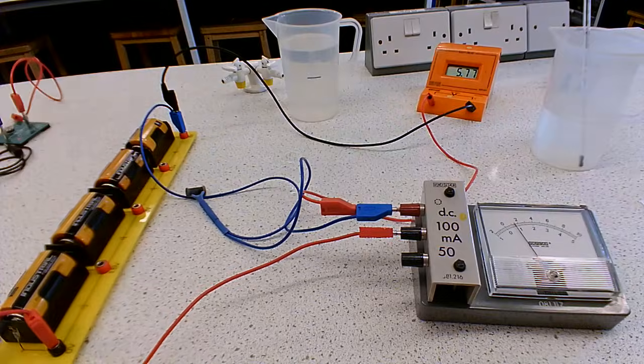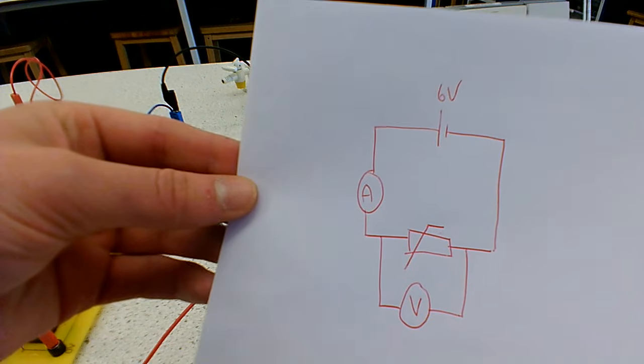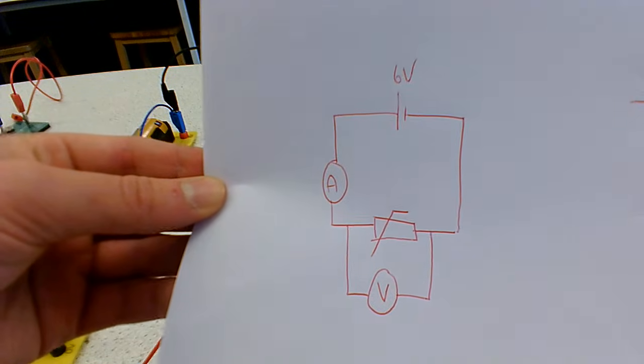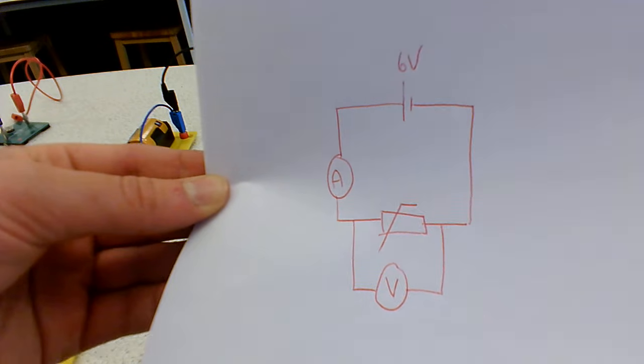So that's what this circuit is set up to do. To show you a quick circuit diagram, this is our symbol for a thermistor down here, and we've got our ammeter and our voltmeter.